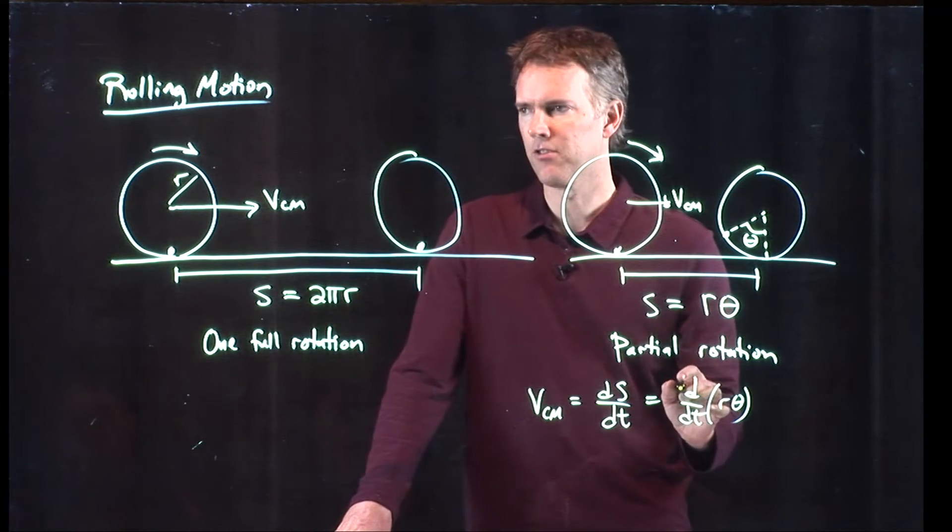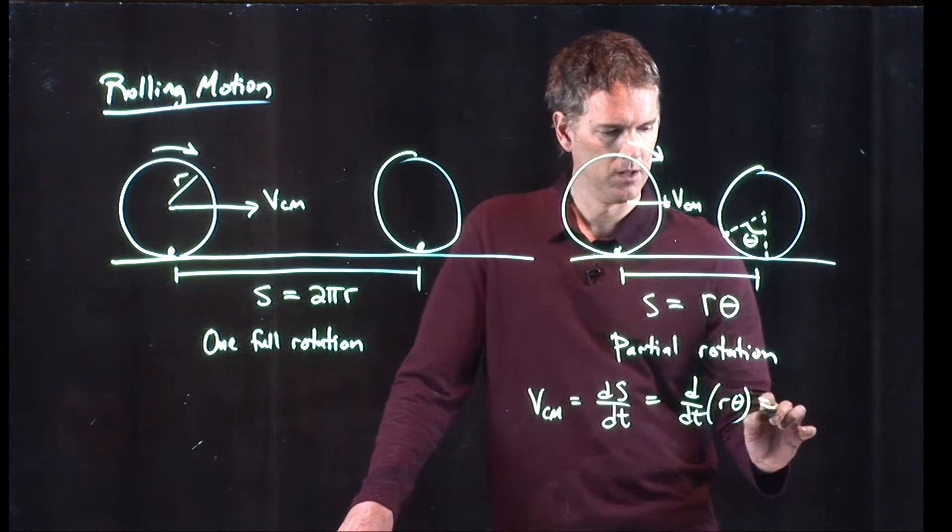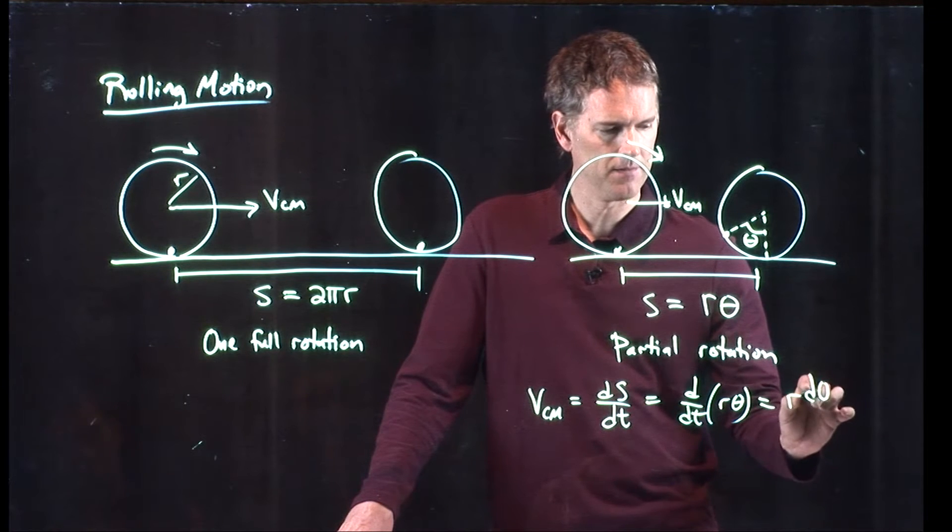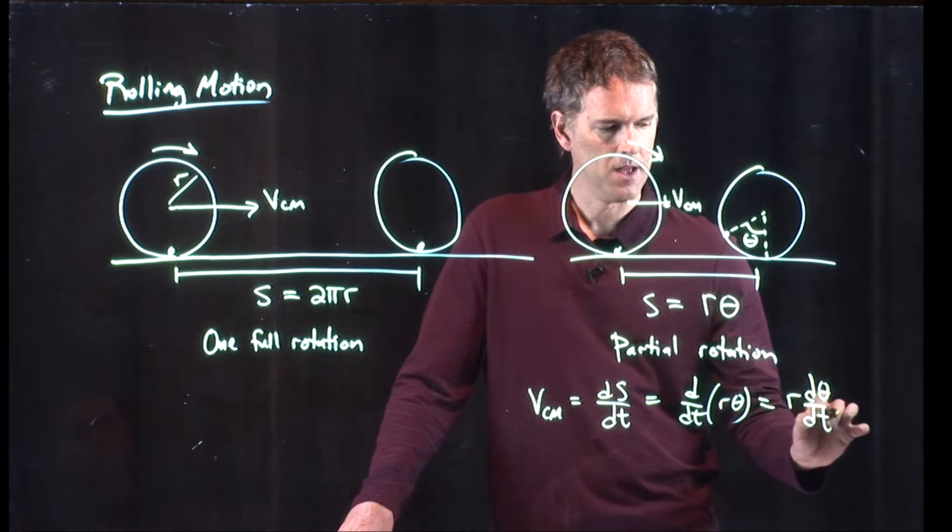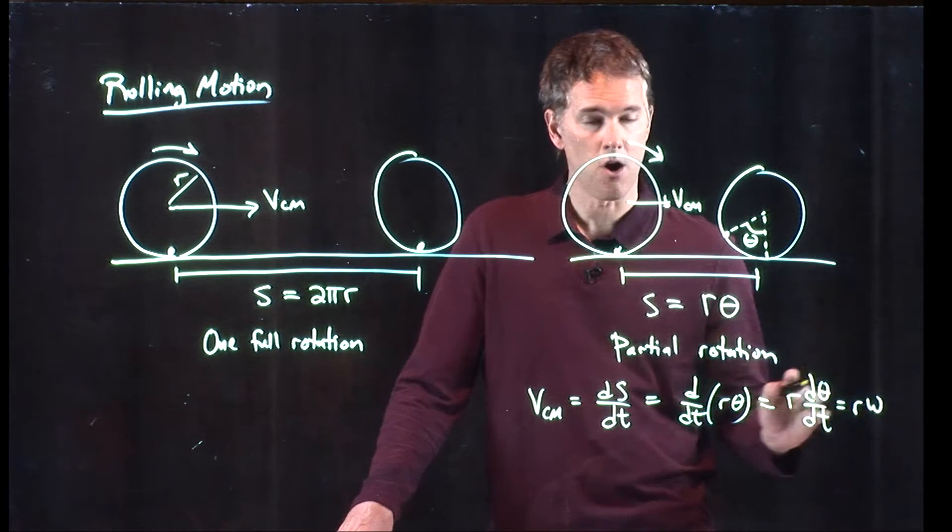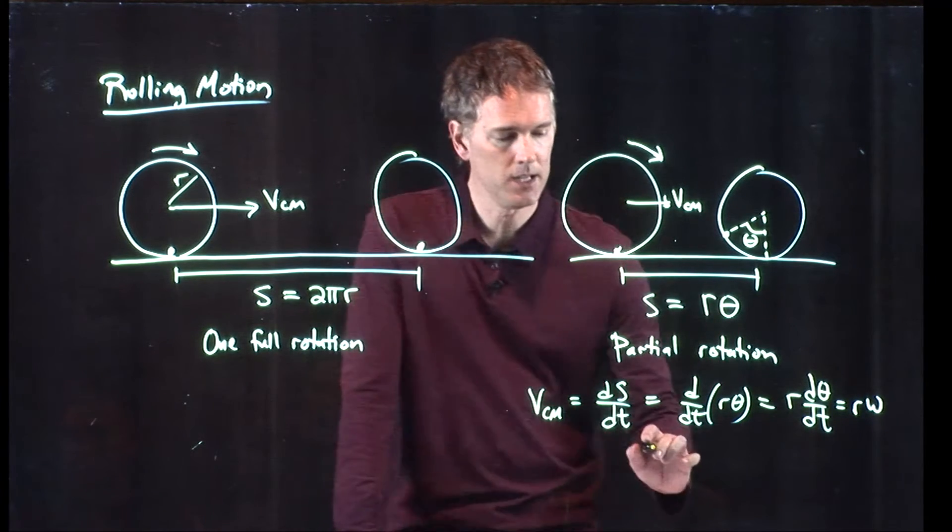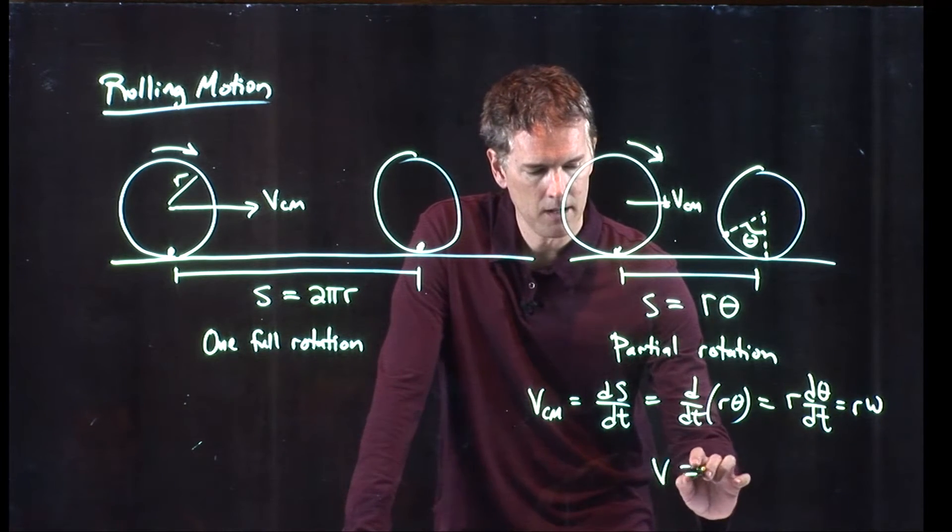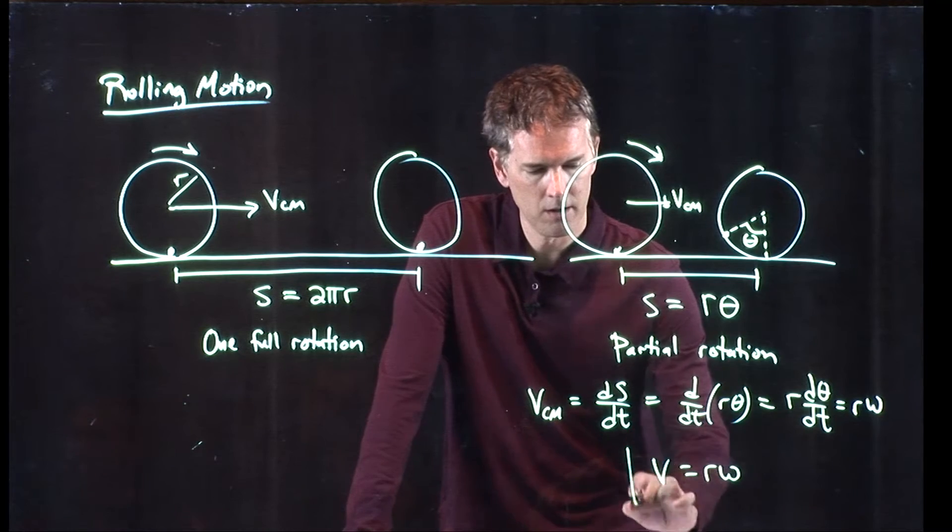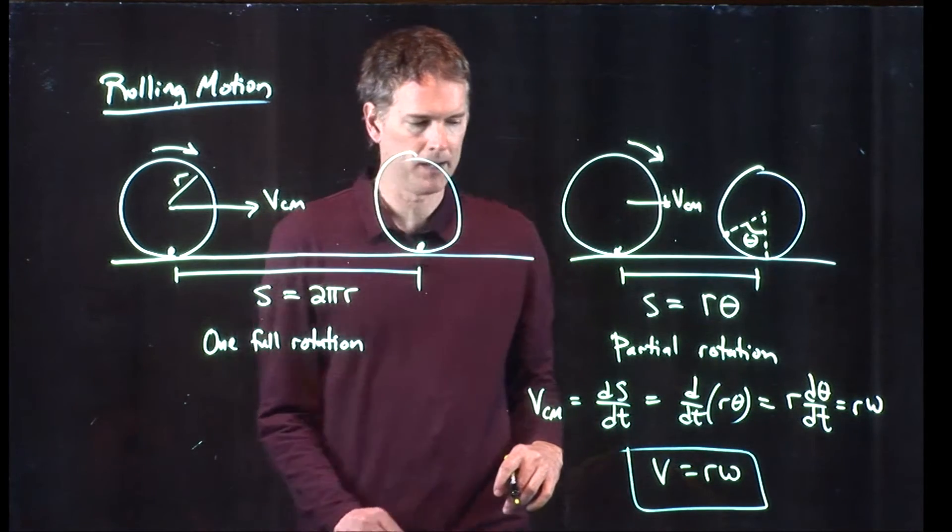r is a constant, that's just the radius of the wheel, so that can come right on out. And we get our relationship between v and omega, like we knew before, v is equal to r times omega.